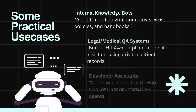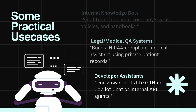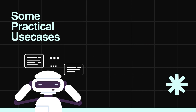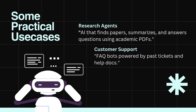Let's look at some practical use cases of RAG. First, Internal Knowledge Bots: a bot trained on your company's wikis, policies, and handbooks. Second, Legal and Medical QA Systems: build a HIPAA-compliant medical assistant using private patient records. Third, Developer Assistance: docs-aware bots like GitHub Copilot Chat or internal API agents. Fourth, Research Agents: AI that finds papers, summarizes, and answers questions using academic PDFs. Fifth, Customer Support: FAQ bots powered by past tickets and help docs.